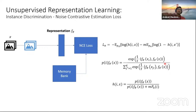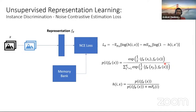Can we learn these representations? Yes — there are recent methods like instance discrimination, MoCo, and SimCLR specifically for images, which can learn representations in an unsupervised way. For example, in instance discrimination using NCE (noise contrastive estimation) loss, given an image, they transform it using different data augmentations, and all these augmentations should have the same representation. They use this constraint and the NCE loss to learn the representation.